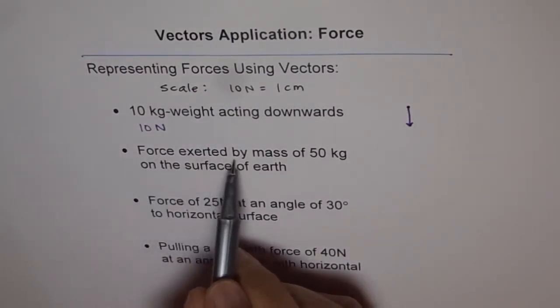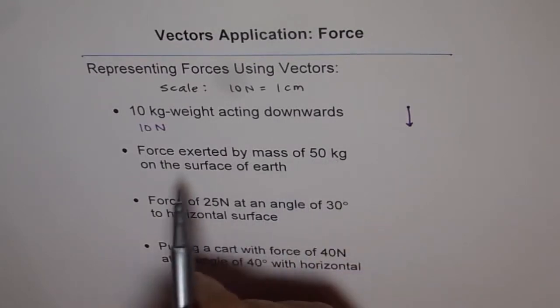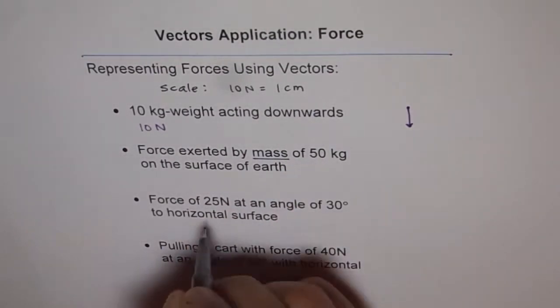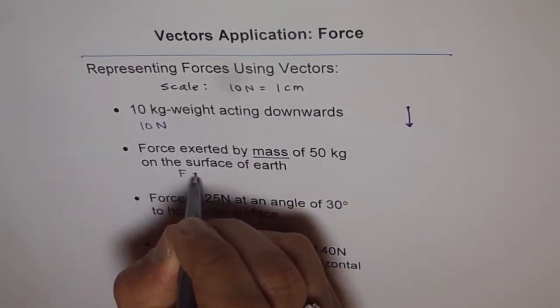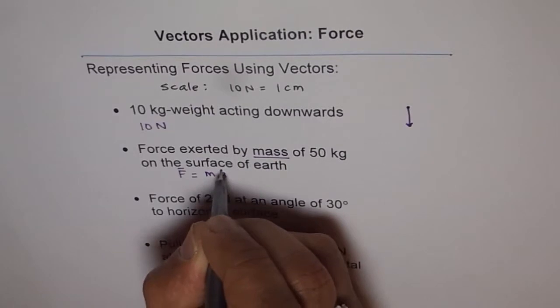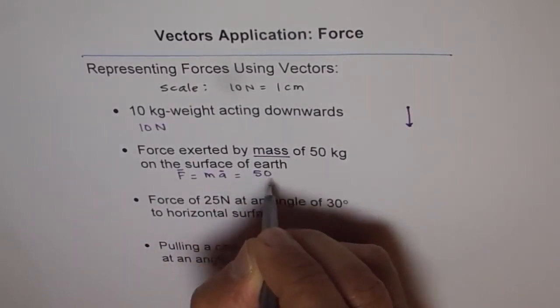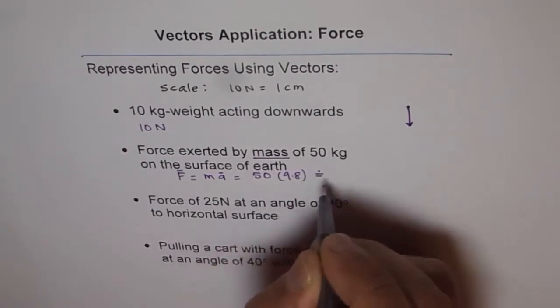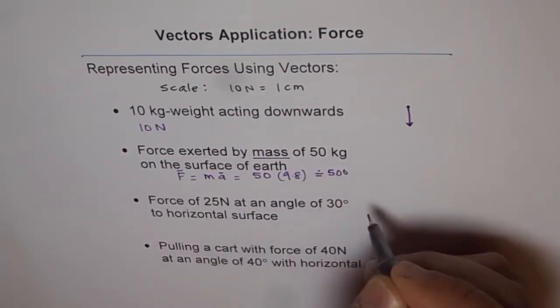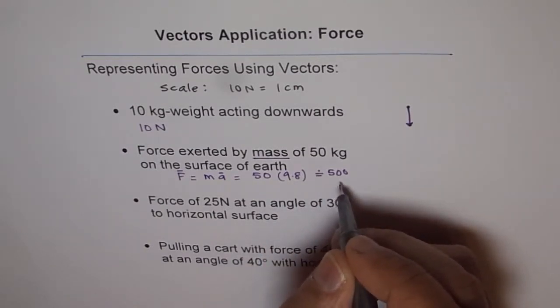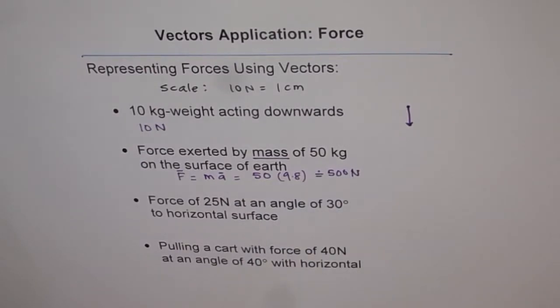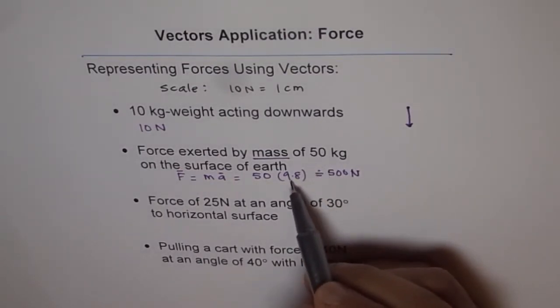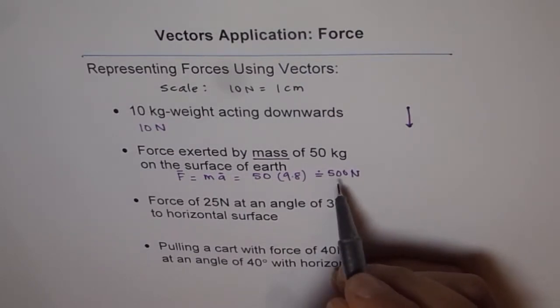Now the second one is force exerted by mass of 50 kg on the surface of the earth. This is 50 kg mass. Important thing here is mass, it is not weight. That has to be converted to force. F equals mass into acceleration, and acceleration is 9.8. So it is 50 times 9.8 meters per second squared. I will approximate it to 500. A common mistake is sometimes you overlook multiplying by a factor of 9.8, and that makes a huge difference. This is 500 Newtons.